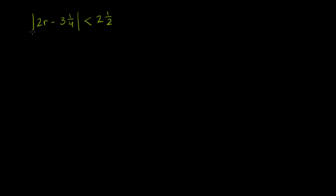We have the absolute value of 2r minus 3¼ is less than 2½, and we want to solve for r. Right from the get-go, we have to deal with this absolute value.